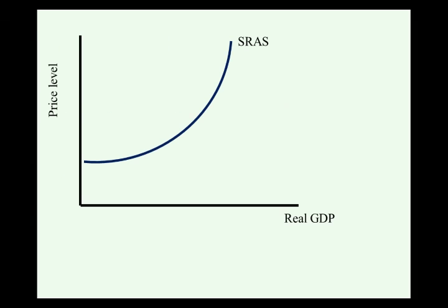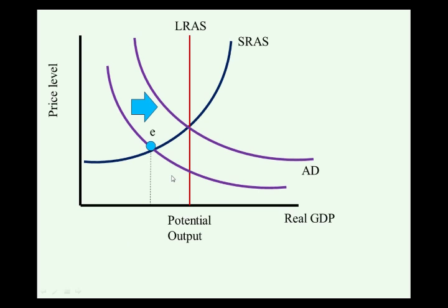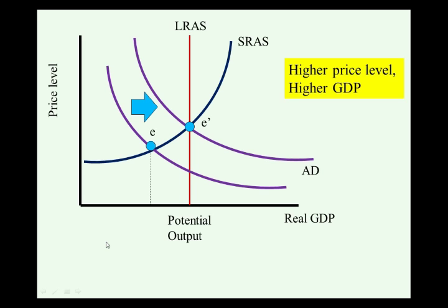Let's see a picture of this. A recessionary gap means we have a short-run equilibrium below potential output. In order to get back to potential output, an expansionary fiscal policy — a tax cut or spending increase — would shift aggregate demand to the right towards long-run equilibrium. As a result, we have a higher price level and a higher GDP at potential output.